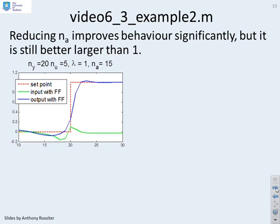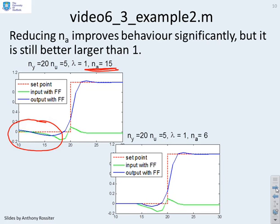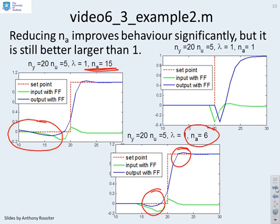Here's a different example, example 2, and you'll see the same sort of insights. If I use a large na, here 15, I get too much anticipation and behavior that's really rather unhelpful. If I choose na equals 6, again you can see the balance of errors before and after the setpoint change is about the same, and you're doing roughly as well as you can. If I take na to be too small, then you look at the tracking errors and you see it's much worse.